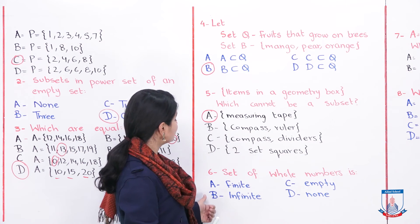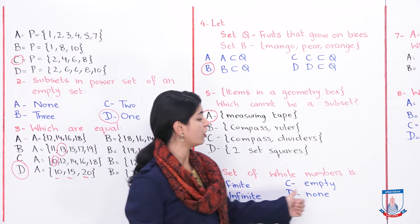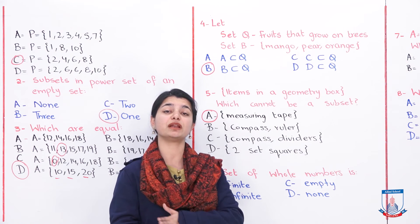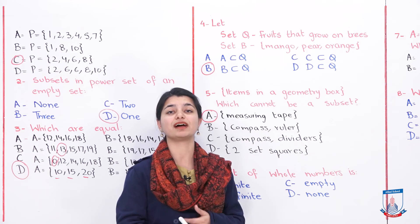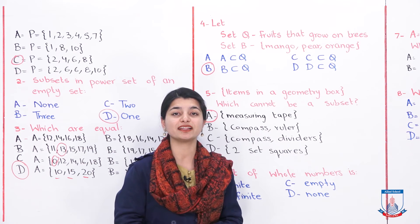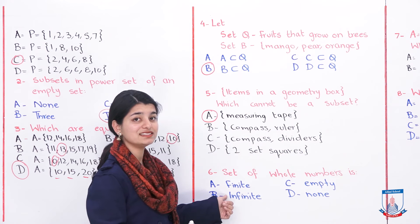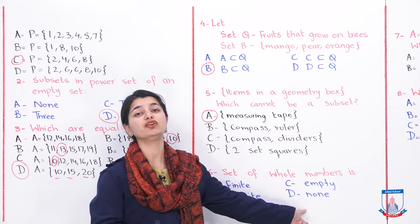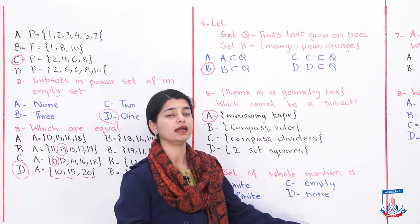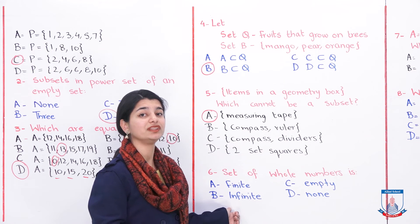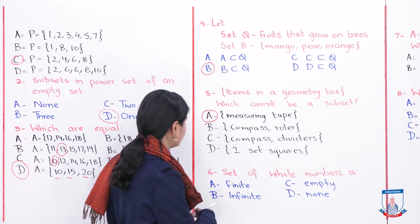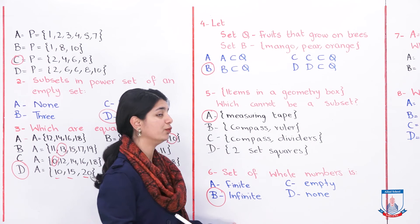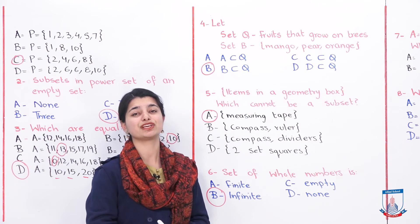The sixth MCQ asks: the set of whole numbers is — what type of set? Whole numbers start from 0 and include all natural numbers. An empty set is out since whole numbers exist. A set with a limit is finite; one without a limit is infinite. The set of whole numbers has no upper limit, so it is an infinite set.